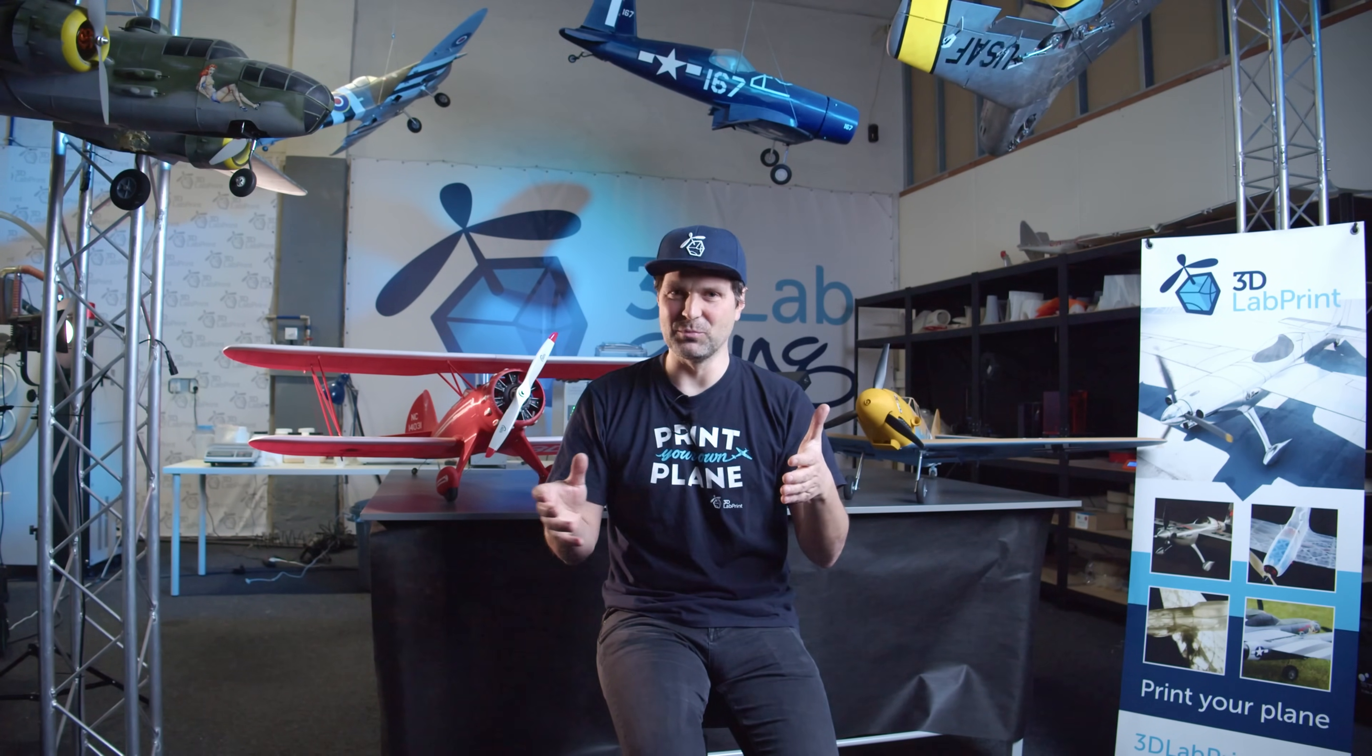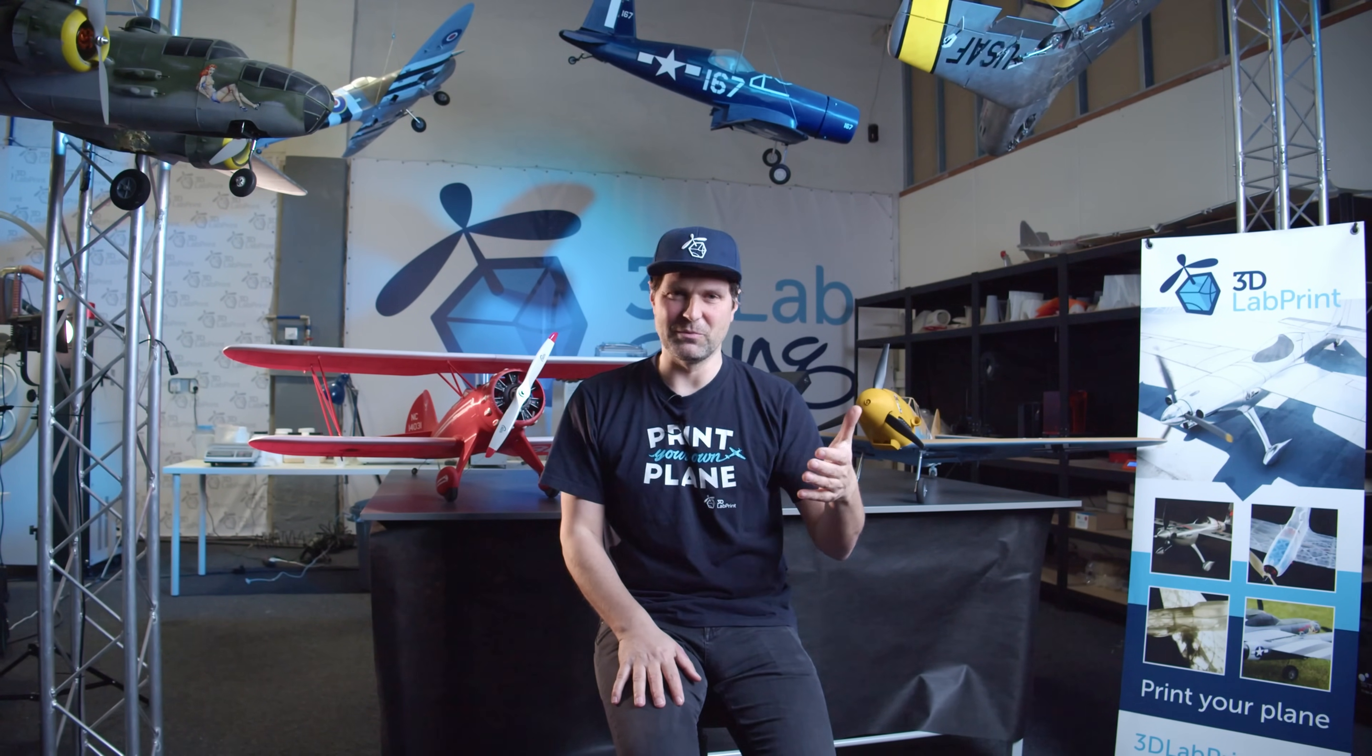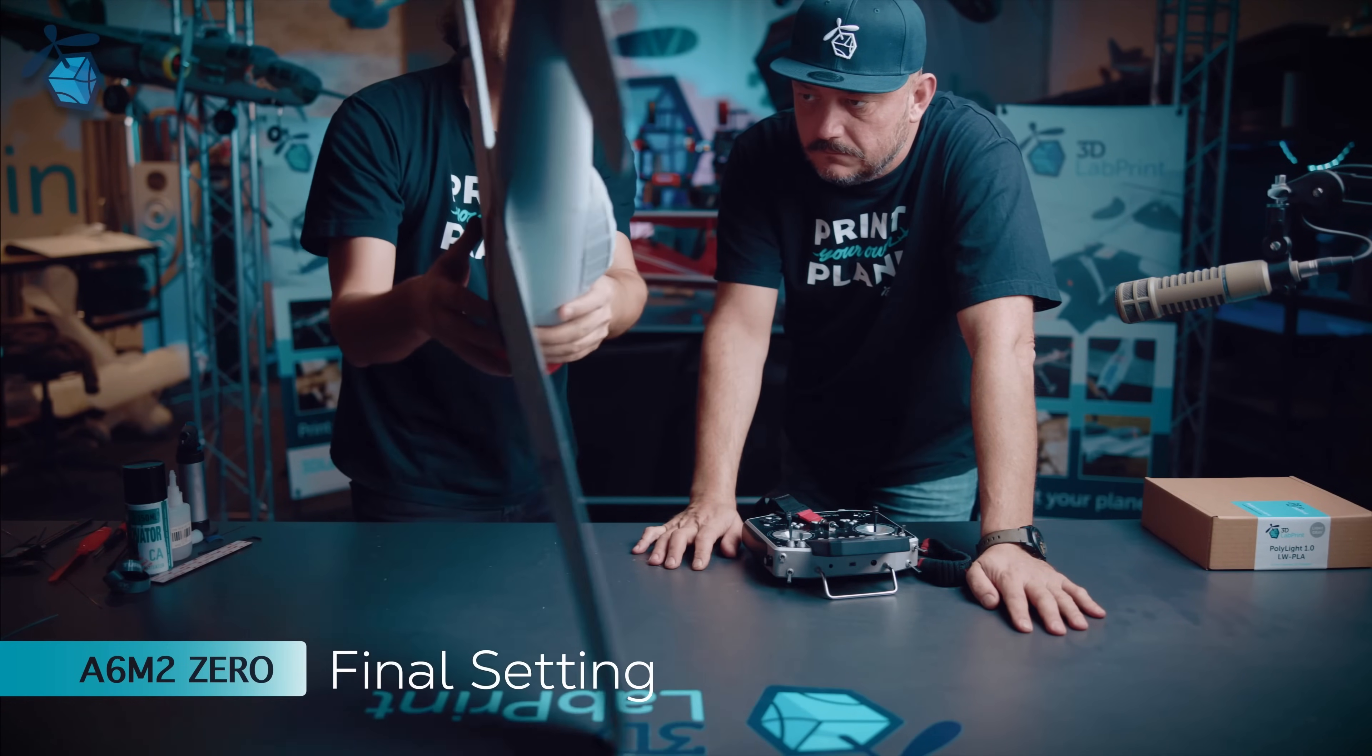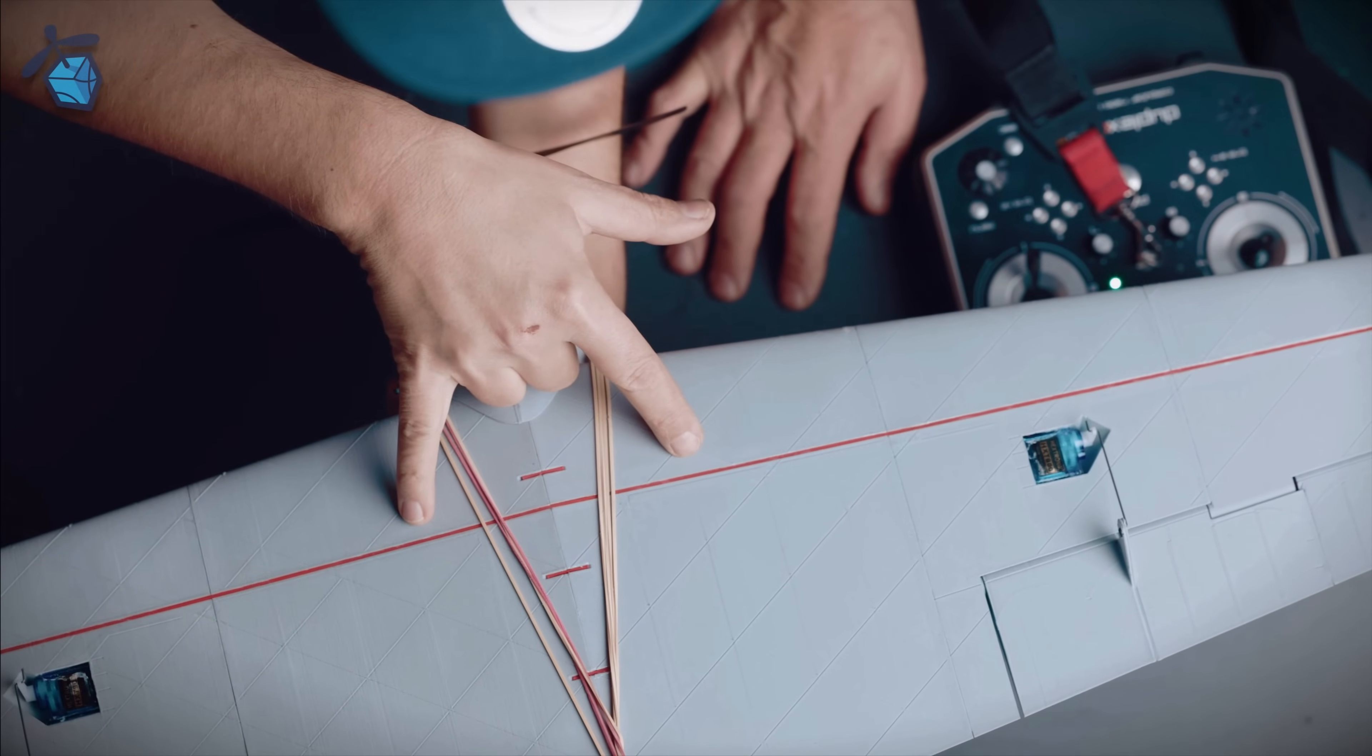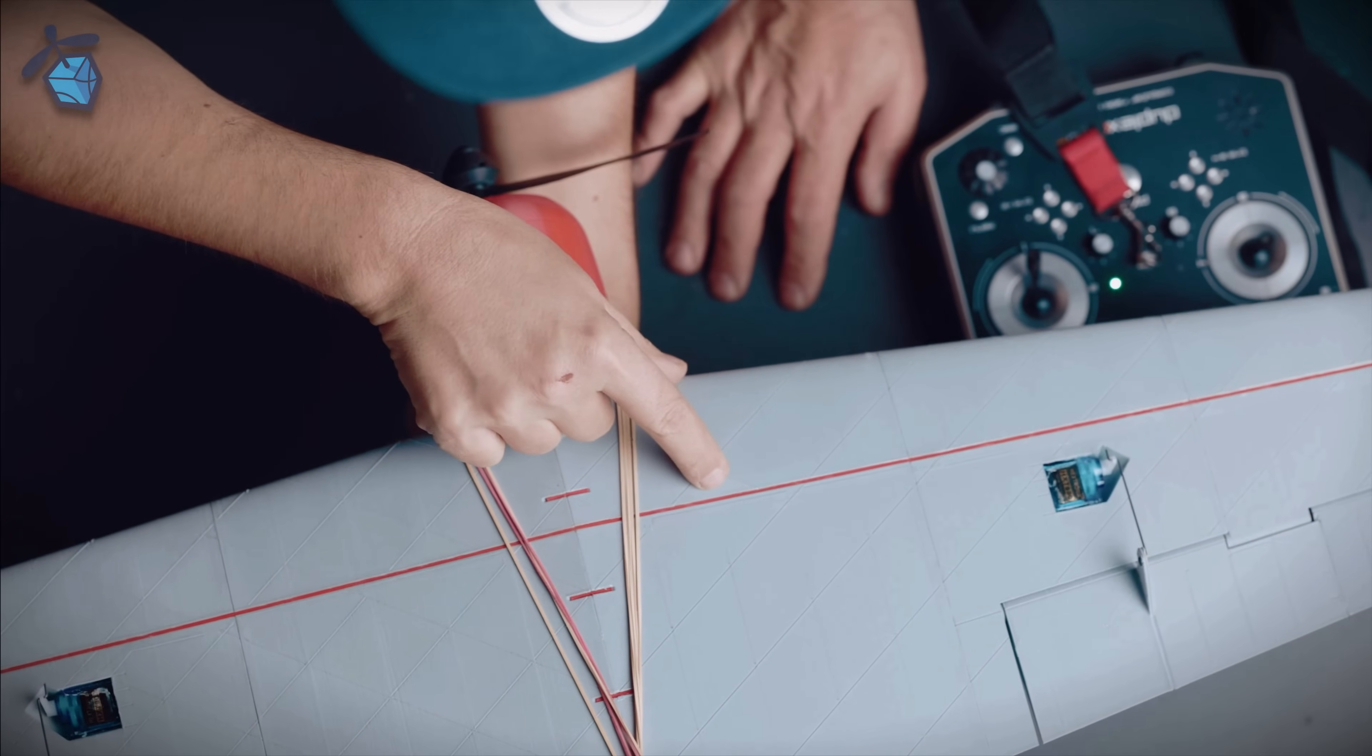It becomes unstable and it can, for example, overreact to the slightest input from the user. That's why we need to move the center of gravity closer to the leading edge of the wing. This makes the plane more stable, with a smoother response to the controls, making it more forgiving of the mistakes you might make as a beginner.